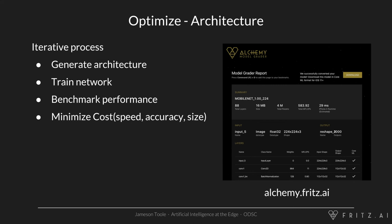After you train your network, you want to benchmark performance across multiple dimensions. As the developer, you need to decide how you're going to optimize things for speed, accuracy, and the size of your model. There are trade-offs between all of them, and you really need to figure out the best balance for your applications. It's an iterative process, and the more you can do before training things, the better — because training is really what takes the most time.